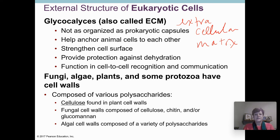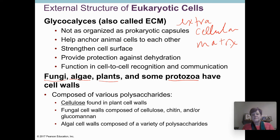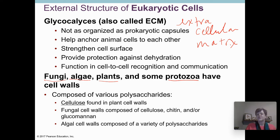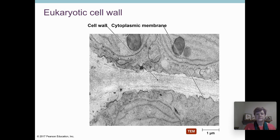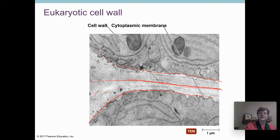Fungal cells, algae, plants, and some protozoa have cell walls, but none of them have peptidoglycan in their cell walls. When we say 'cell wall,' that's a very general term — each group has a particular structure and chemical makeup for its cell wall. For bacteria, that's the peptidoglycan structure we focus on. This picture shows two cells with cell membranes and lighter-shaded cell walls; where they touch there's typically a layer called the middle lamella, a sticky substance that glues the walls together.